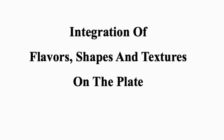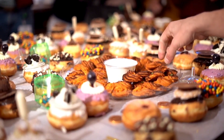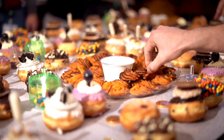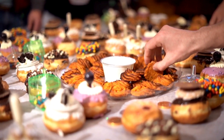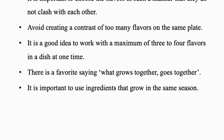Let's talk about flavor. A right balance of flavor is very essential for the plate. A complete plate must comprise a main item — which can be meat, vegetable, or starch — accompanied with some sauce or garnish. It is important to choose flavors in such a manner that they do not clash with each other. Avoid creating a contrast of too many flavors on the same plate; work with a maximum of three or four flavors at one time.